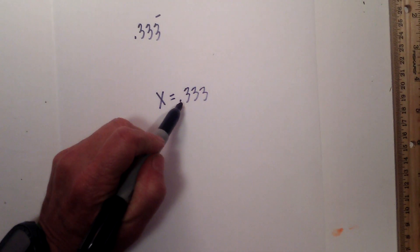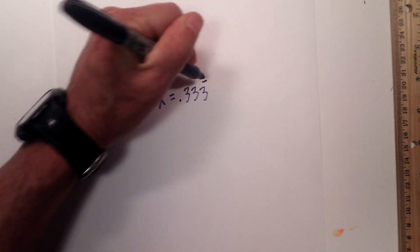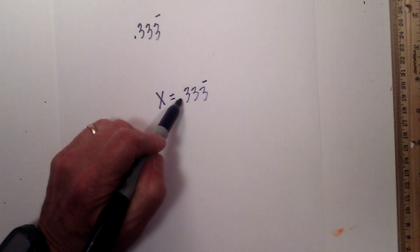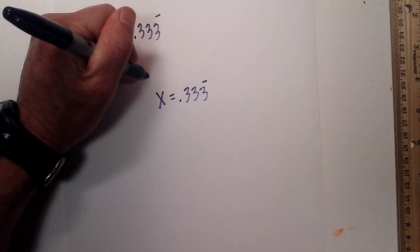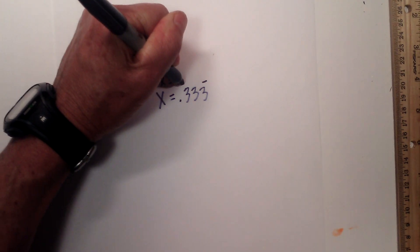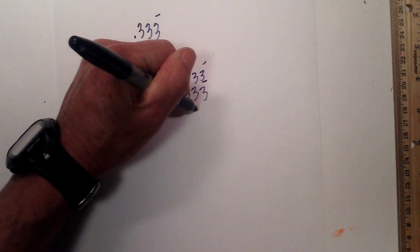Next, for my equation 2, I want the repeating portion to be to the left of the decimal. And 3, 3, 3 is what is repeating. So I just need to move it one place to the right. So that becomes 10x is equal to 3.333 repeating. Next, subtract the two equations.